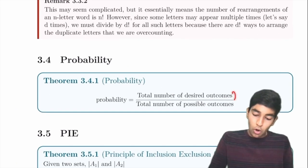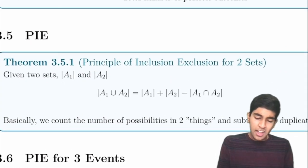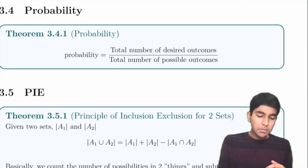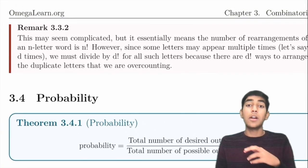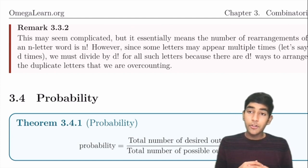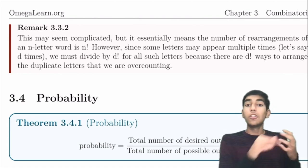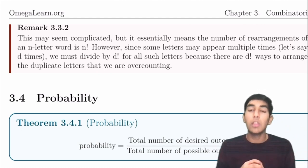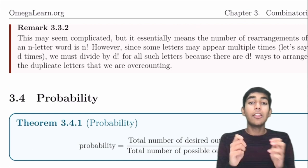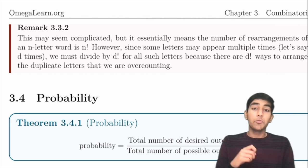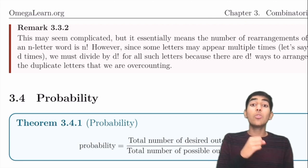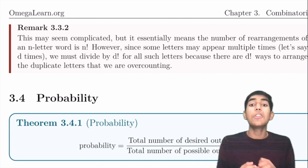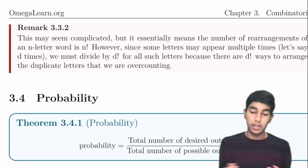Probability is successful outcomes over total outcomes. Casework is a strategy of breaking a problem into multiple cases and solving each separately. Complementary counting counts the opposite of what you want and subtracts from the total — especially useful when the problem says 'at least.'